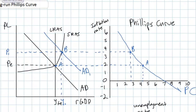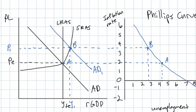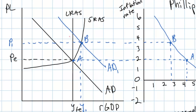Assuming the government takes no action and inflation persists following this increase in aggregate demand, in the long run workers begin demanding higher wages — this is what we call the flexible wage period. Over time, workers will demand higher nominal wages, and as firms are forced to pay them, they will reduce the number of workers they employ, moving the economy back to YFE. The higher nominal wage rate causes cost-push inflation and a leftward shift of the short-run aggregate supply curve to SRAS1.